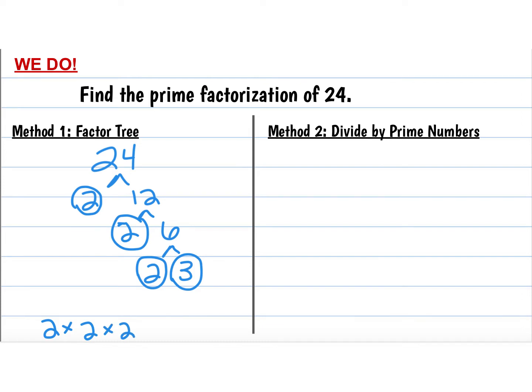I'm always going to write them least to greatest. This right here is what we call expanded form, and then just like with powers and exponents, we can also write it in exponential form. So we have 2 being multiplied by itself 3 times, so I could write it as 2 to the power of 3 times 3, and there would be our final answer.